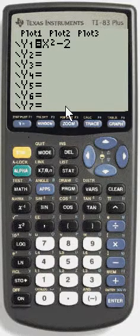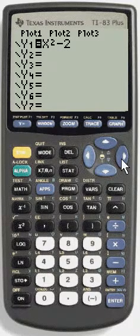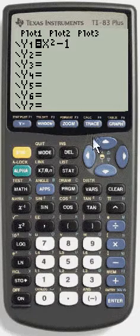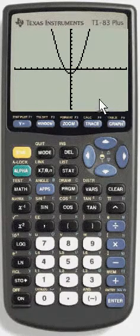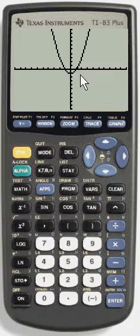So suppose we start off with a simple function x squared minus 1 and we can see that it's got two zeros, one at negative one, one at positive one.